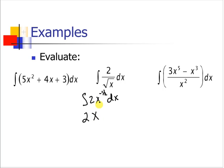And now we use our power rule. So we're going to add 1 to negative 1/2 and divide by the new exponent and add our integration constant.